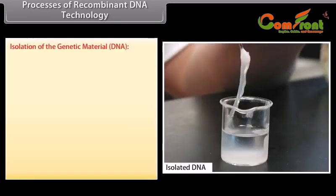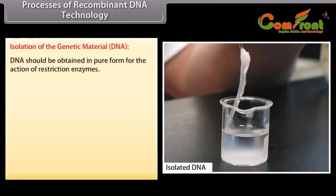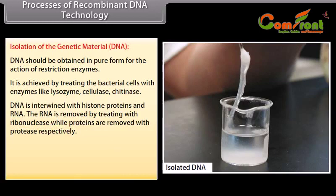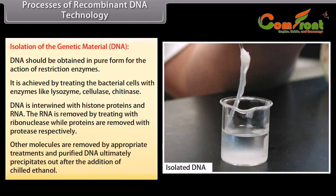Isolation of the genetic material — DNA. DNA should be obtained in pure form for the action of restriction enzymes. It is achieved by treating bacterial cells with enzymes like lysozyme, cellulase, and chitinase. DNA is intertwined with histone proteins and RNA. The RNA is removed by treating with ribonuclease while proteins are removed with protease. Other molecules are removed by appropriate treatments, and purified DNA ultimately precipitates out after the addition of chilled ethanol.